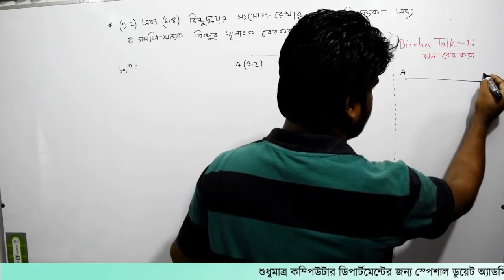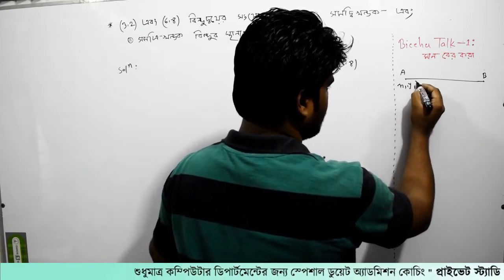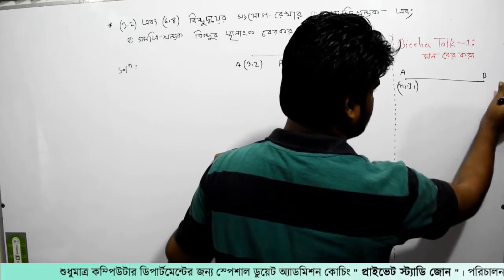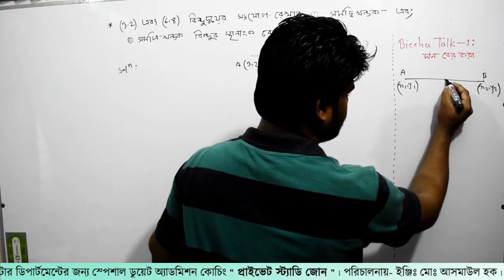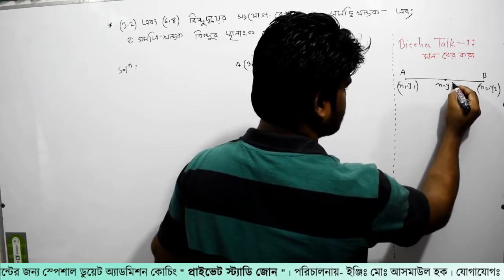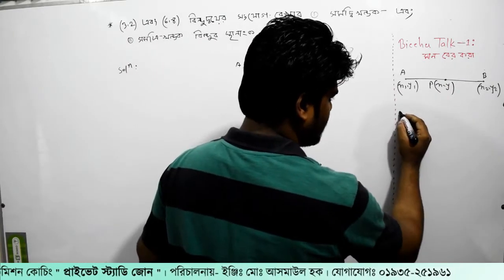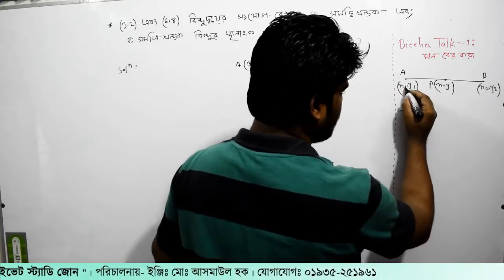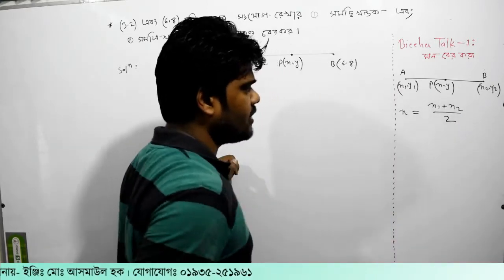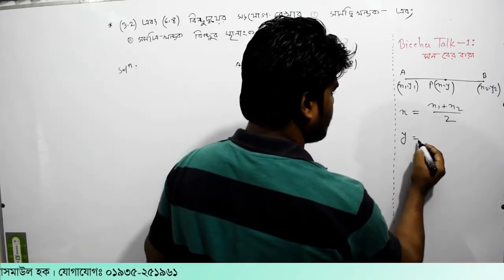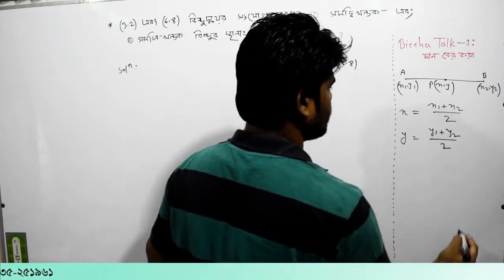কেটা জেনিশের মান দিতা জেনিশের মান, তালে দিতা জেনিশের মান বির করার জন্য দিতা কি লাগে? আমরা লেকে পারি এই মধ্য বিন্দুর স্থানাংক থেকে লেকে পারি। একটা x equal to x1 plus x2 divided by 2, and y equal to y1 plus y2. This is the two difference.